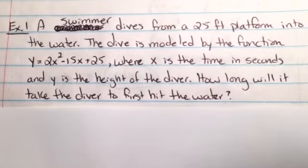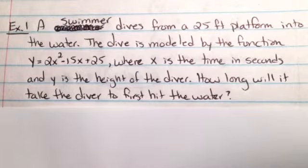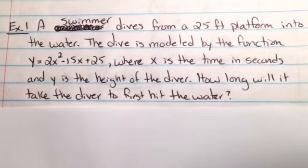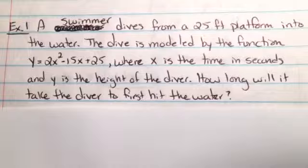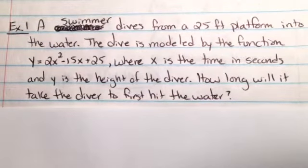Okay, example one. A swimmer dives from a 25-foot platform into the water. The dive is modeled by the function y equals 2x squared minus 15x plus 25, where x is the time in seconds and y is the height of the diver. How long will it take the diver to first hit the water?